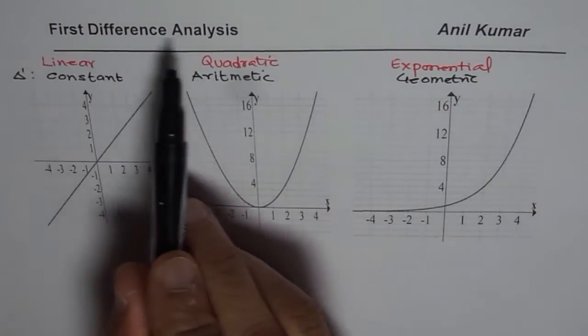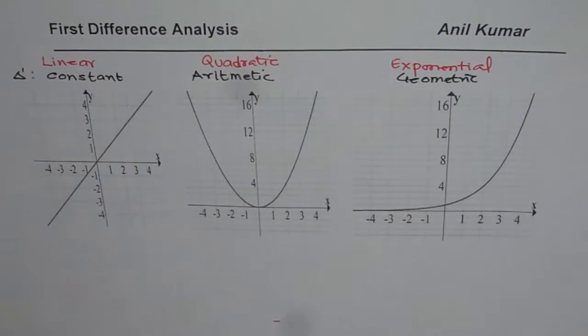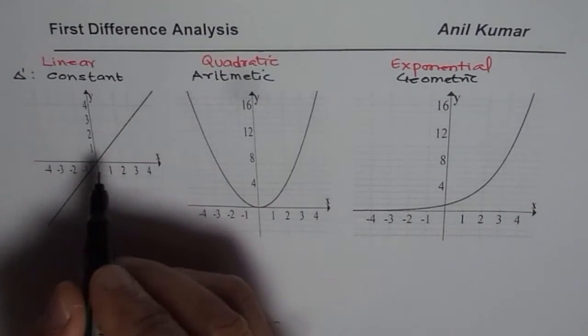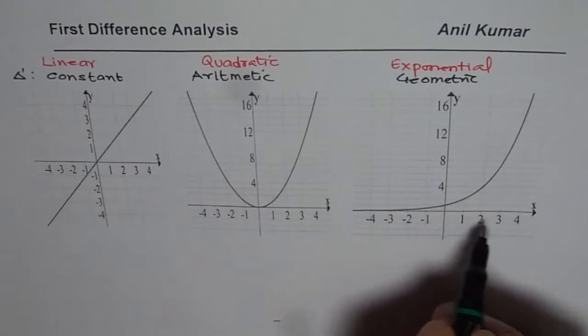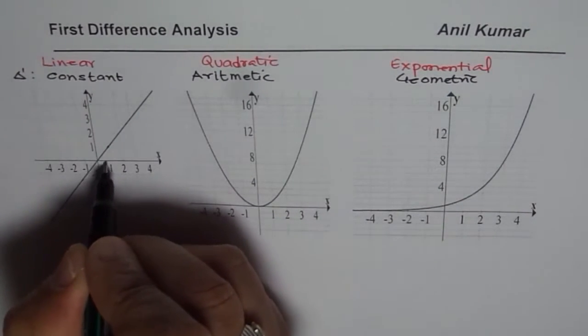When we say first difference, then we are trying to see what happens for unit change in x value. So in these graphs, we can say along the x axis, we have 1, 2, 3, 4. So we can have points which are one unit away.